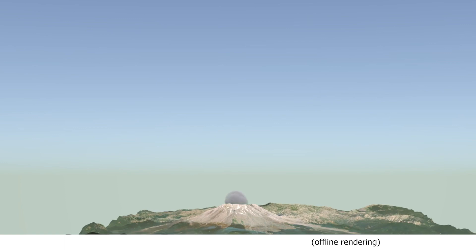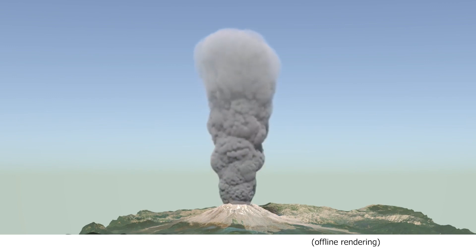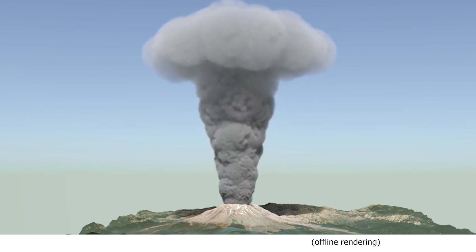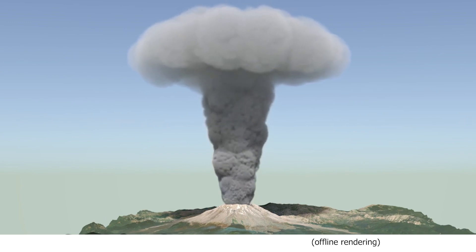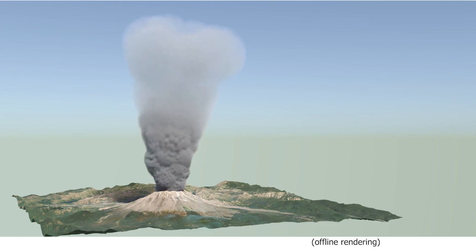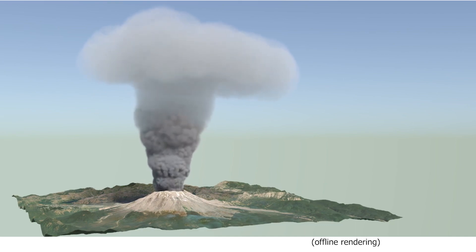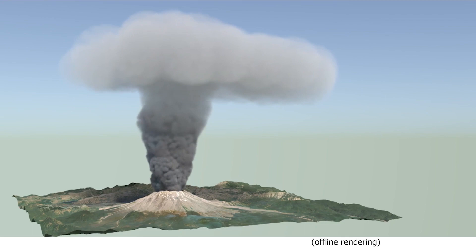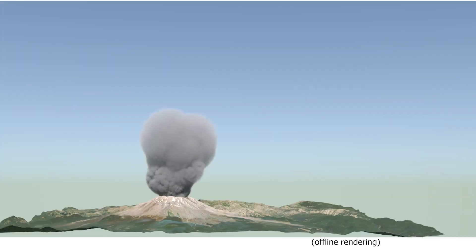For higher quality visualization, the sphere data can be exported to define a volumetric density used in an offline renderer — here showing a rising column without wind, here showing it under a slight wind of 15 meters per second, and this is another example with a stronger wind of 45 meters per second.